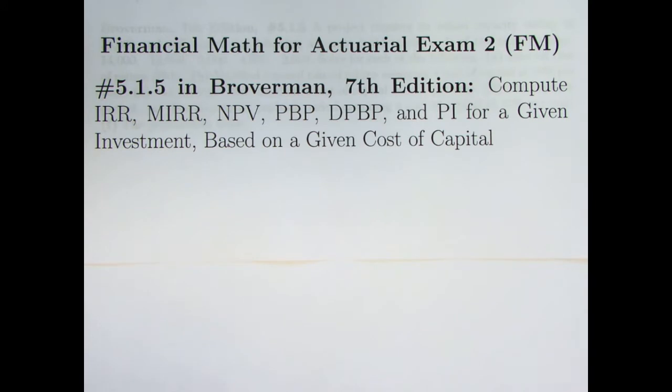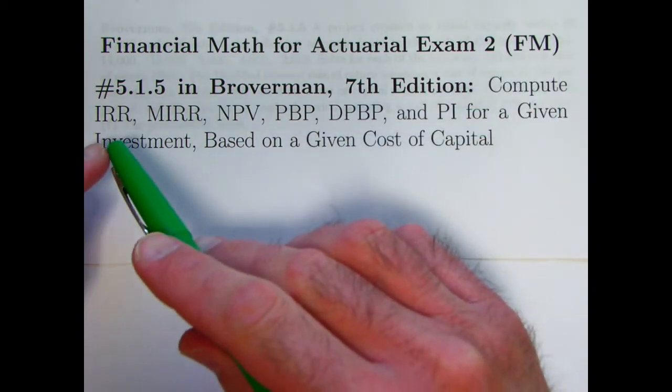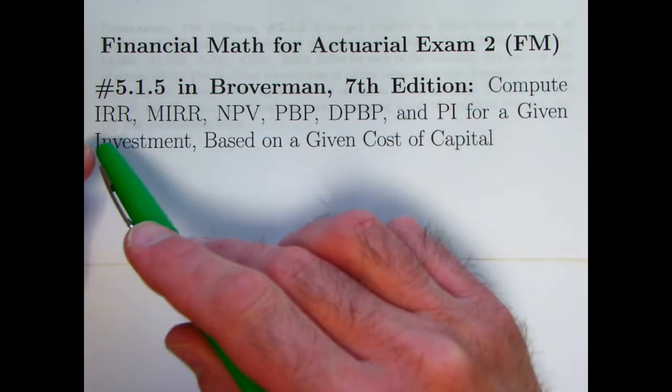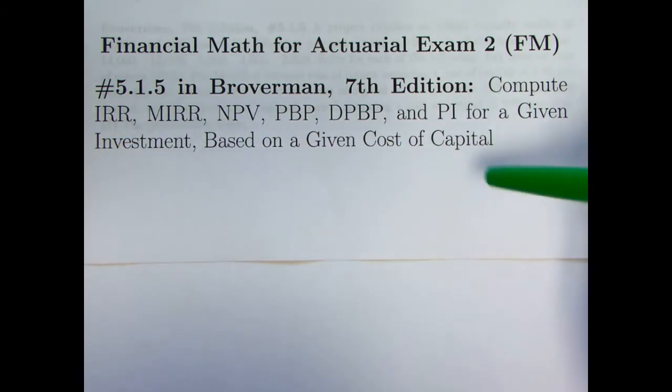Another thing to say about this problem is it's actually not something that's technically on the actuarial exam FM syllabus here in 2018. You should know the concept of IRR and NPV, internal rate of return and net present value, but some of these other new concepts with these new abbreviations are technically not on the syllabus now. They could be on a future syllabus perhaps, but I think it's still worth going over. For one thing, these are good things to know just in general for corporate finance. For another thing, it's going to solidify some of the ideas that we've talked about recently with the IRR and the NPV and the idea of the interest preference rate or cost of capital. It'll be a good thing to review that with another video here.